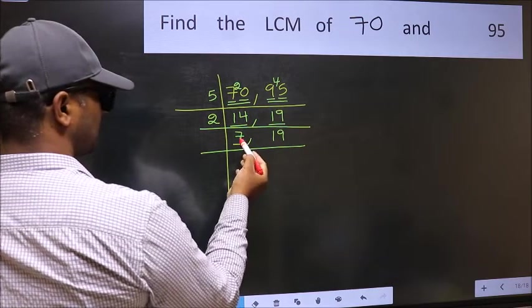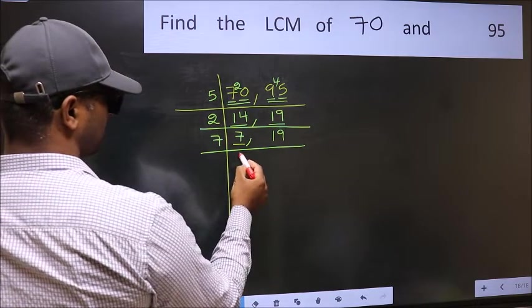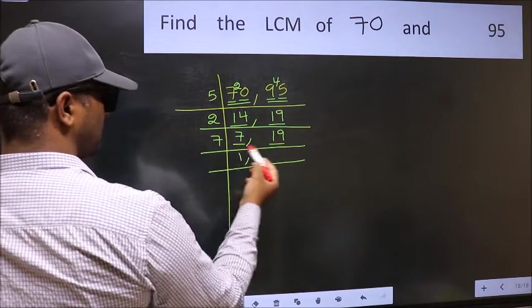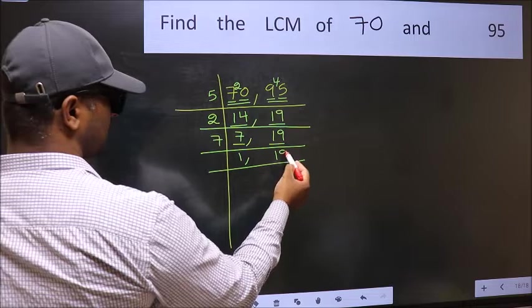Now here we have 7. 7 is a prime number, so 7 once is 7. The other number 19 is not divisible by 7, so you write it down as it is.